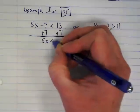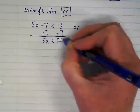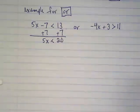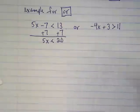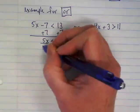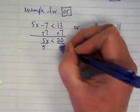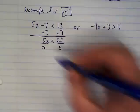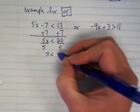We get 5x is less than 20. Next step will be divide by 5. It's a positive number, so will anything change with the symbol? No. So x is less than 4.